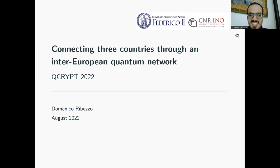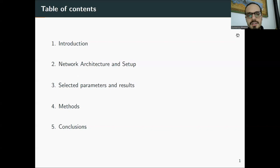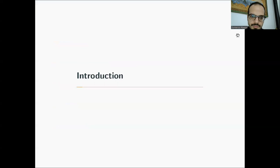I will talk about the quantum network that we realized last summer, putting in connections three European countries: Italy, Slovenia and Croatia. After a little introduction about quantum key distribution, quantum networks and this job, I will explain the architecture of the network and the setup that we used. Then, after telling something about the parameters, I will show you the results. I will talk a bit about the post-processing methods implemented and then I will conclude.